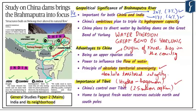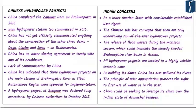All these rivers are transboundary in nature with the exception of Yangtze and Huanghe. China completed the Zhangmu Dam on the upper reaches of the Brahmaputra in 2010 — though it accepted construction only officially in 2010 — meaning China had not officially communicated anything about its construction. Other dams include Dagu, Jiexu, and Ziku, all on the Brahmaputra.